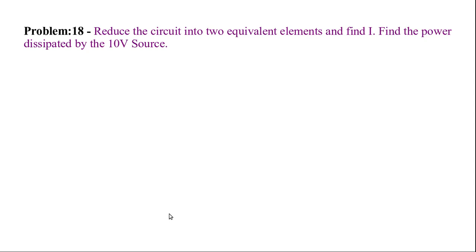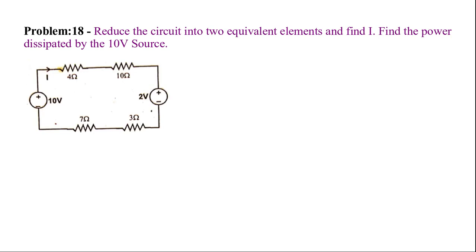This is the continuation of the last session — Problem 18. We have to reduce the circuit to two equivalent elements and find the current, plus find the power dissipated by the 10-volt source. The circuit has four resistors that must be combined into a single resistor, and two voltage sources that must be combined into one voltage source.